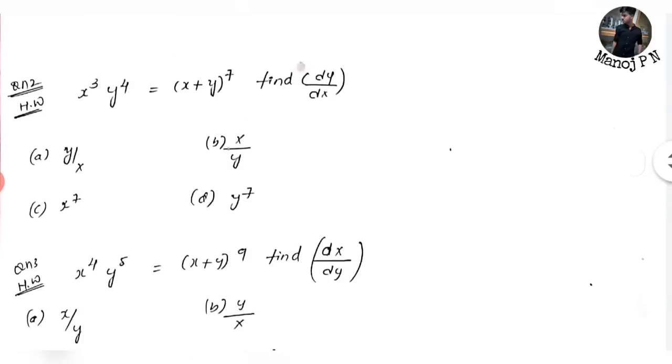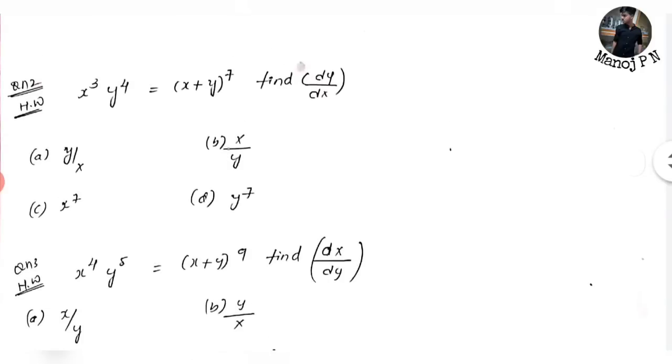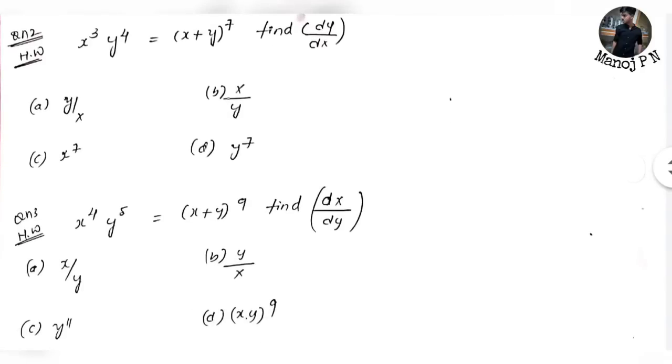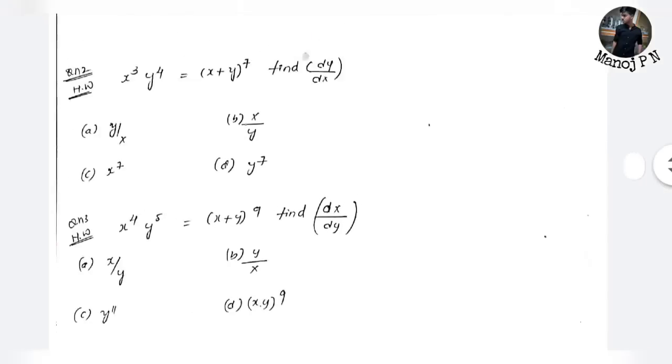That is right here. So this is the same way — when you have a question of this form, the direct answer is y divided by x. If you want dx divided by dy, then it is x divided by y. Simple. Go to the screenshot and answer in the comment section.